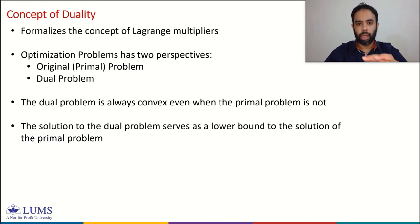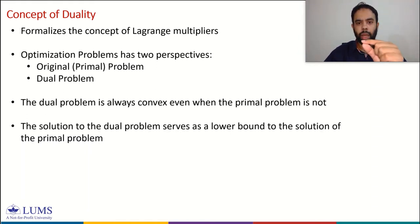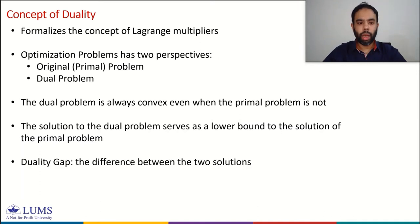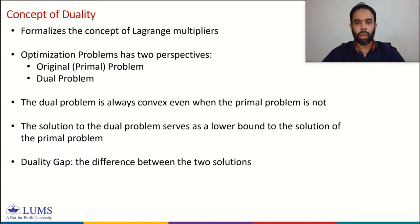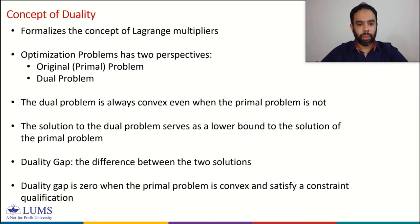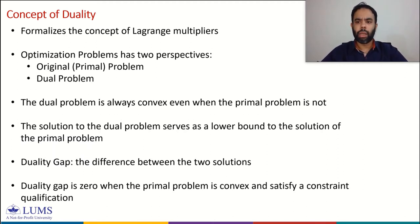Since the dual solution is a lower bound, the difference between the solution of the primal problem and the solution of the dual problem is referred to as the duality gap. We will look at conditions under which the duality gap is zero—called strong duality—and also at weak duality. The duality gap is zero when the primal problem is convex and satisfies a constraint qualification, which we will study shortly.